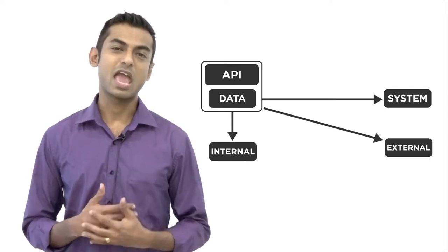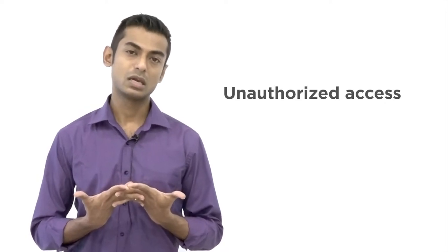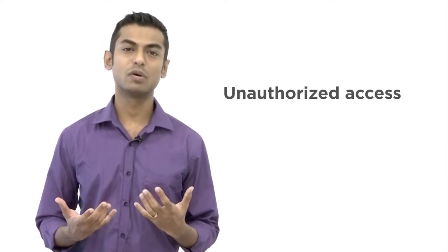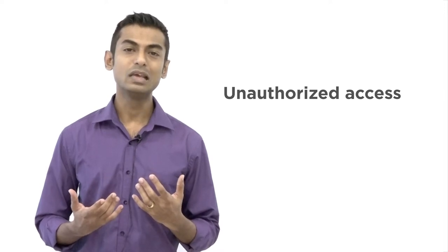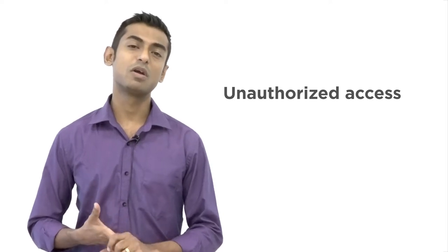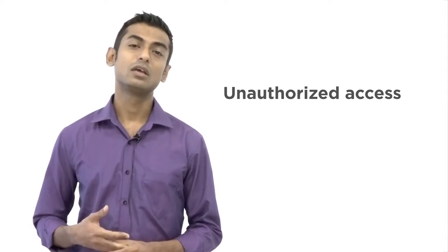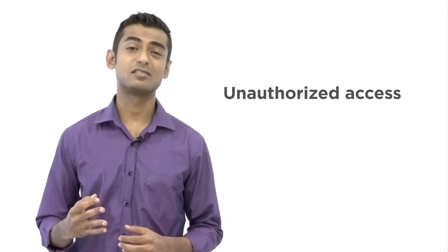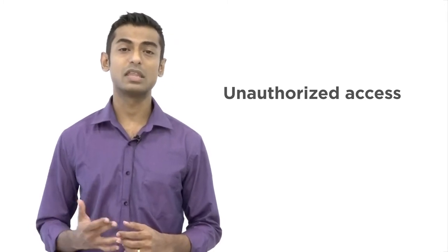So exposing APIs over the network is awesome and brings a lot of benefits, but it also introduces some problems that need to be addressed. The first problem is that you run the risk of having unauthorized access to your APIs. Anything exposed over a network can be accessible by anyone on that network, so you need to have a way of ensuring that only authorized persons can gain access to the data provided by that API.